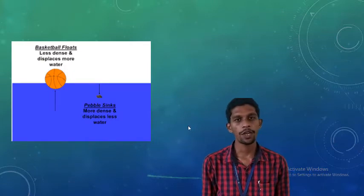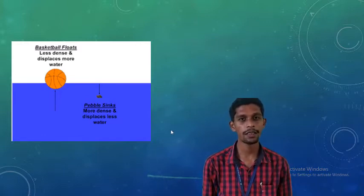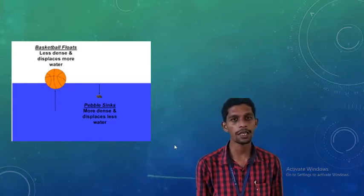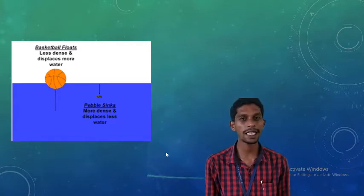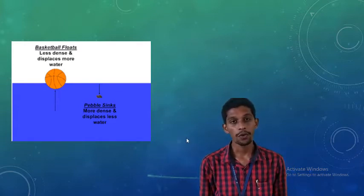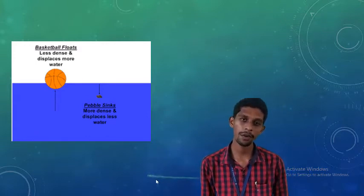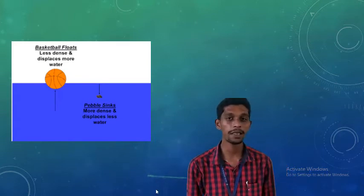Why do lighter objects like a basketball or football float while heavier objects submerge? When you throw a stone in water it sinks, but a plastic ball of larger mass floats. The reason is the difference in densities. Objects that are less dense than the fluid will float, while objects with higher density than water will sink. Another important aspect is having air inside — sometimes ships made of metal alloys float because of the air inside their cabins and rooms.